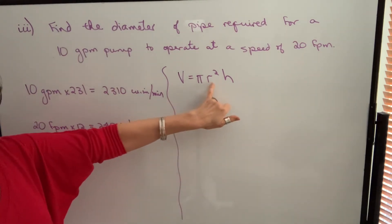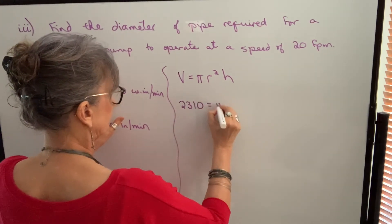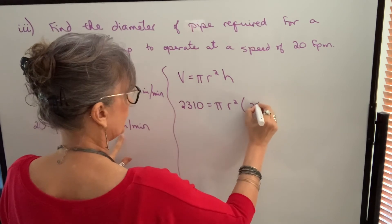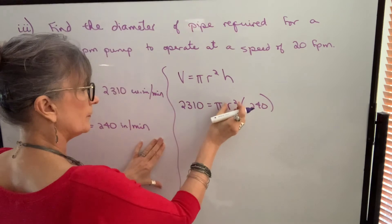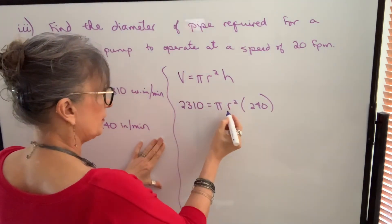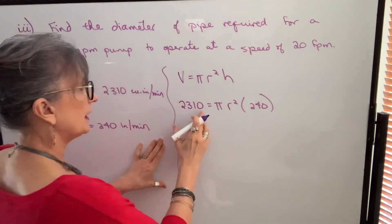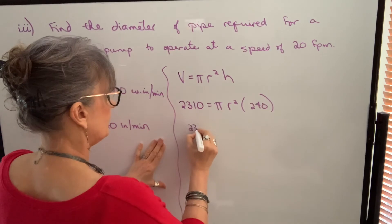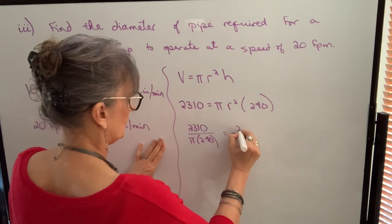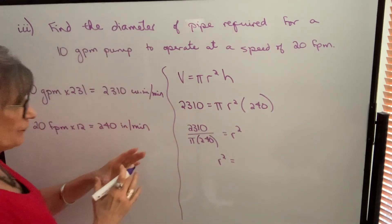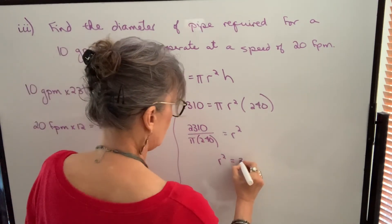So the only unknown is our radius. We plug in 2,310 for volume and 240 for height. In order to solve for radius, I need to find radius squared. So what I'm going to do is I'm going to either multiply pi times 240 and then divide both sides by that, or I divide by pi and then I divide by 240. Whichever method you use, you should get r squared equals 3.06.